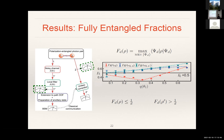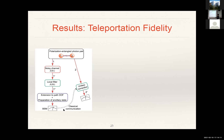Maybe for some of you this is not good enough — you could say that while we have shown the state is in principle useful for teleportation, we didn't actually do the teleportation. Indeed, that is a valid criticism. Therefore, we also did the teleportation itself. For that, you don't do these tomographic measurements but rather let the photons go straight through and complete the teleportation experiment. In that case, you don't look at the fully entangled fraction — you want to use it to complete the teleportation protocol and measure the teleportation fidelity, which is the average fidelity over all possible choices of pure input states.